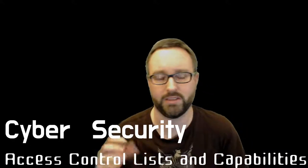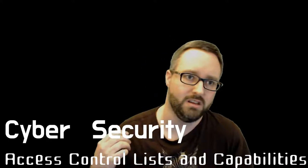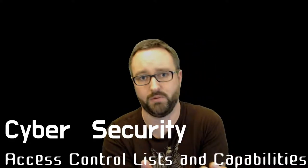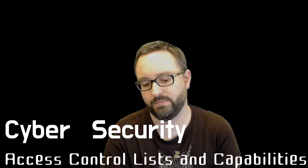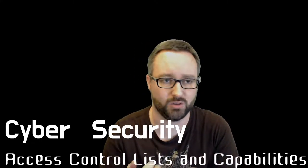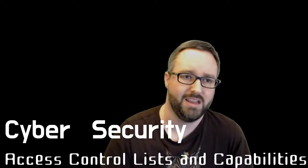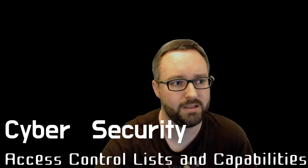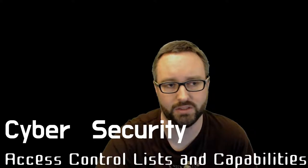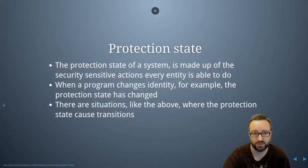I guess this is where the two kind of meet up because we've got all these rules about who's allowed to do what that we're going to store somewhere. In order to actually create a system that works we need to store those rules, and the way we go about storing and reasoning about those rules in practical systems are either via access control lists and capabilities. It's pretty fundamental to understanding how the security on most modern systems work.